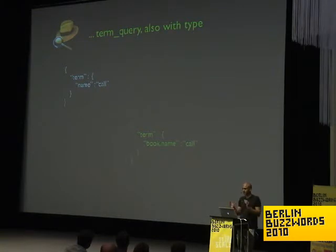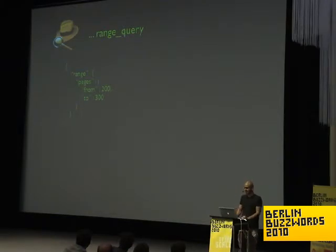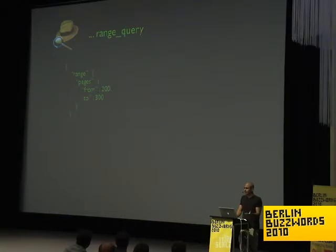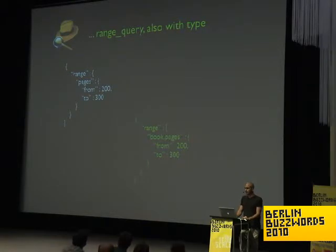It gets automatically wrapped in a filter and all the fancy stuff is done automatically for you. Next are range queries — you define the field you want to search on, in our case 'pages', and search for all books between 200 and 300 pages. Elasticsearch automatically uses Lucene's numeric data features, knowing what type of data you're working with from the JSON, and can use highly performant numeric queries when possible.